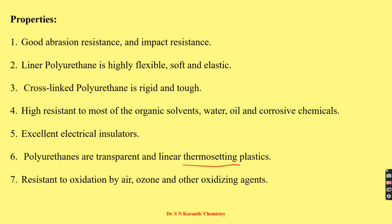Polyurethanes are utilized in four main categories: coatings, elastomers, fibers, and foams. As a coating material, they are used due to their high abrasion resistance, oil resistance, excellent elasticity, and hardness. These properties make them suitable as elastomers as well.